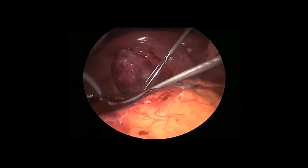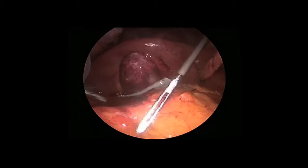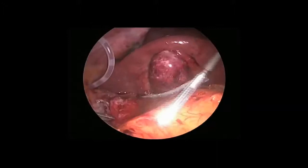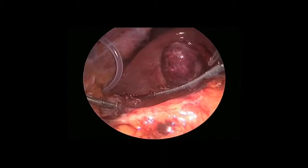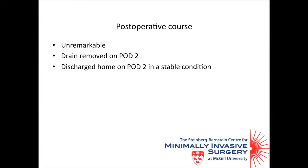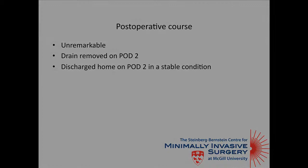The end of the case presented another dilemma in our clinical decision making: should we leave a drain? Seeing as though there was a significant inflammatory reaction, we opted to leave a Jackson-Pratt drain. However, was it necessary? The drain was placed adjacent to the site where the foreign body was removed and sutured to the abdominal wall.